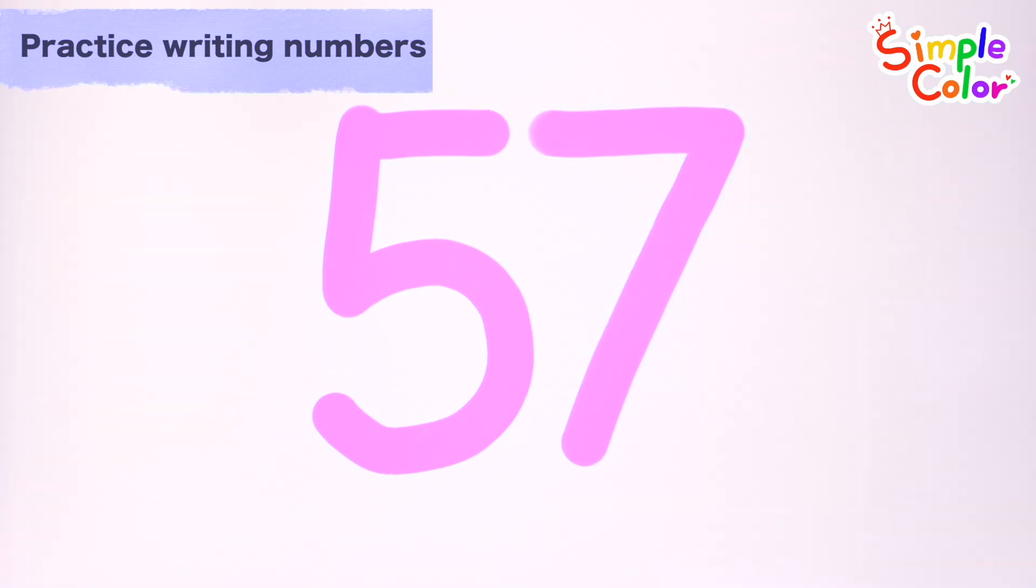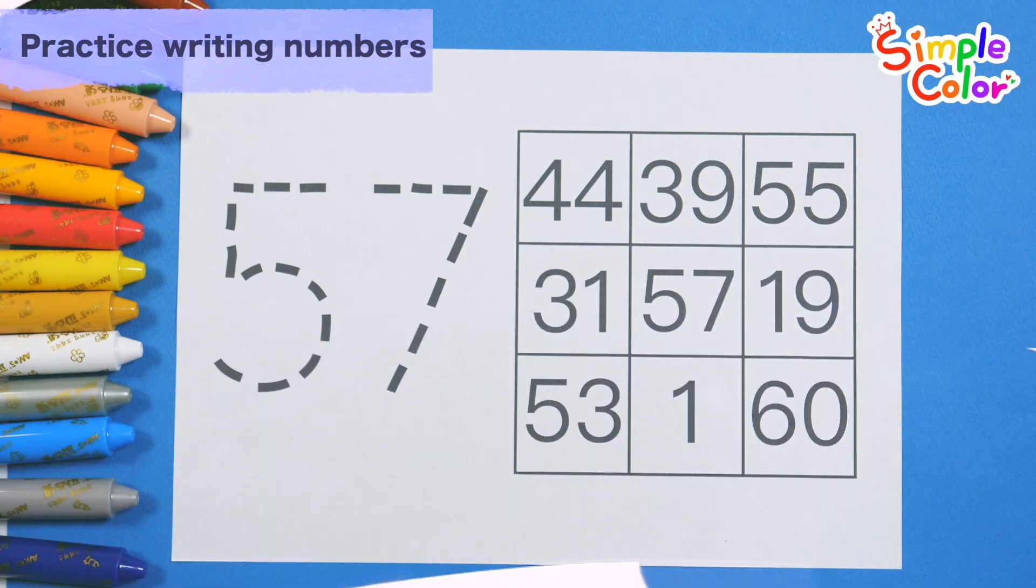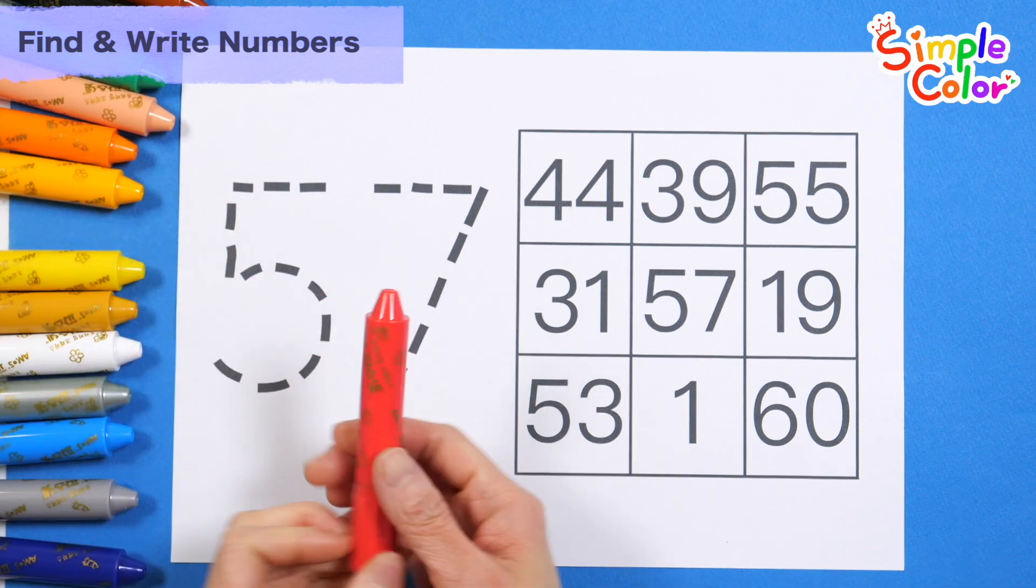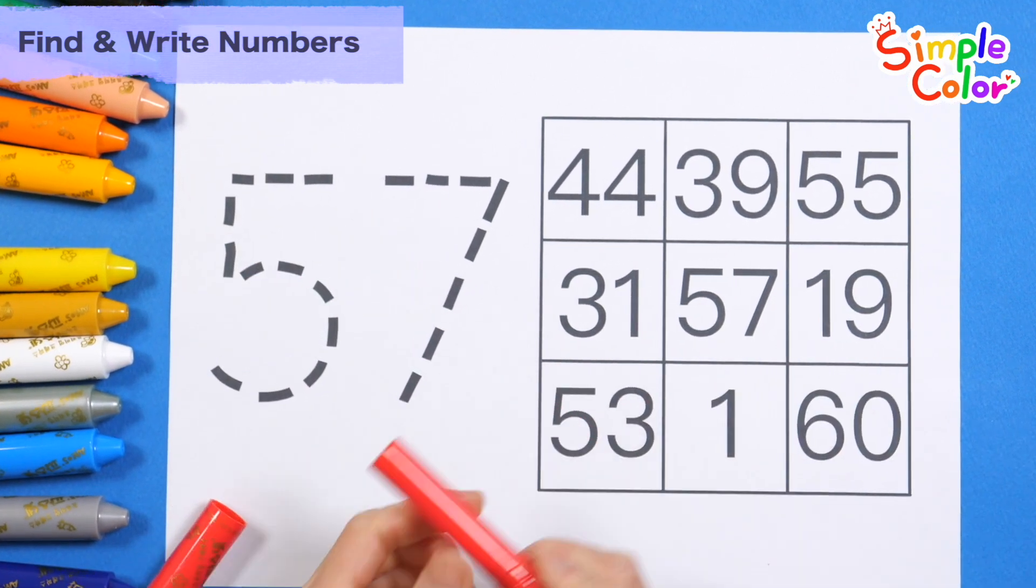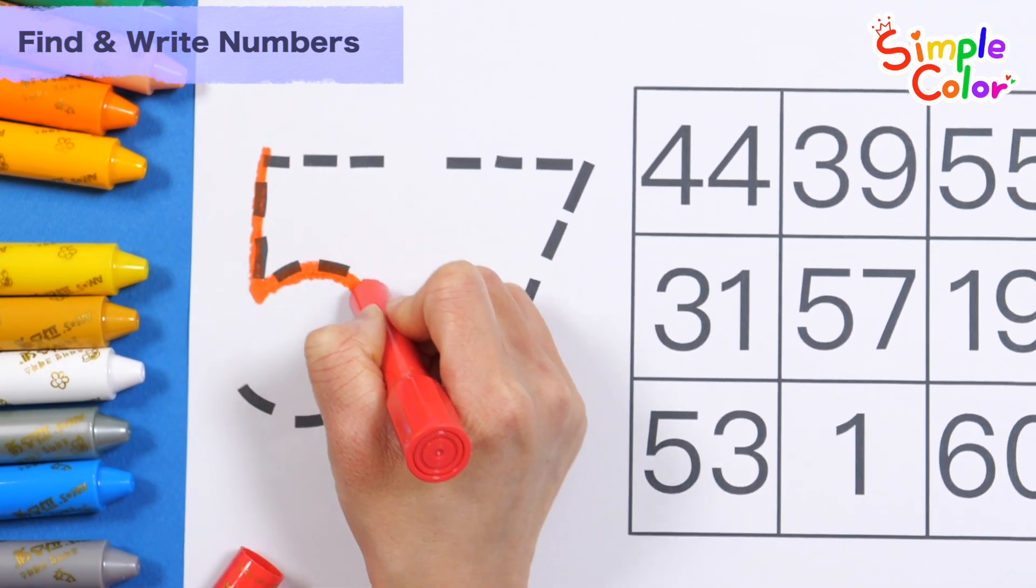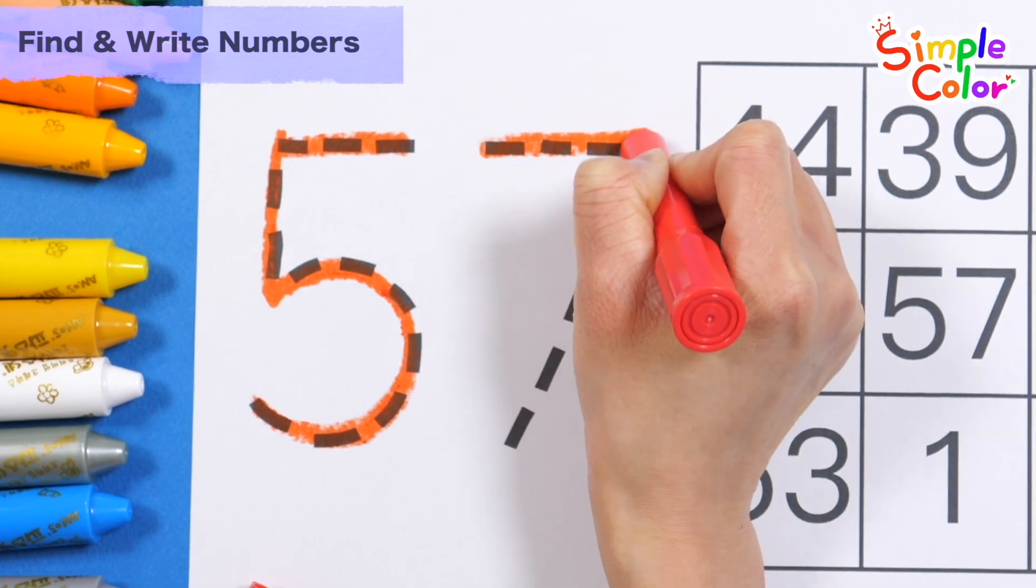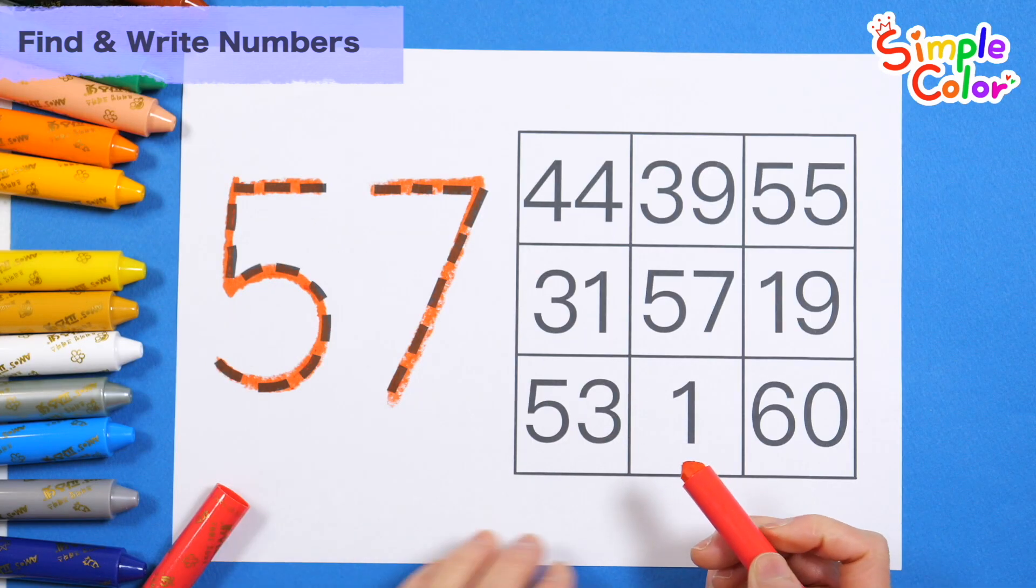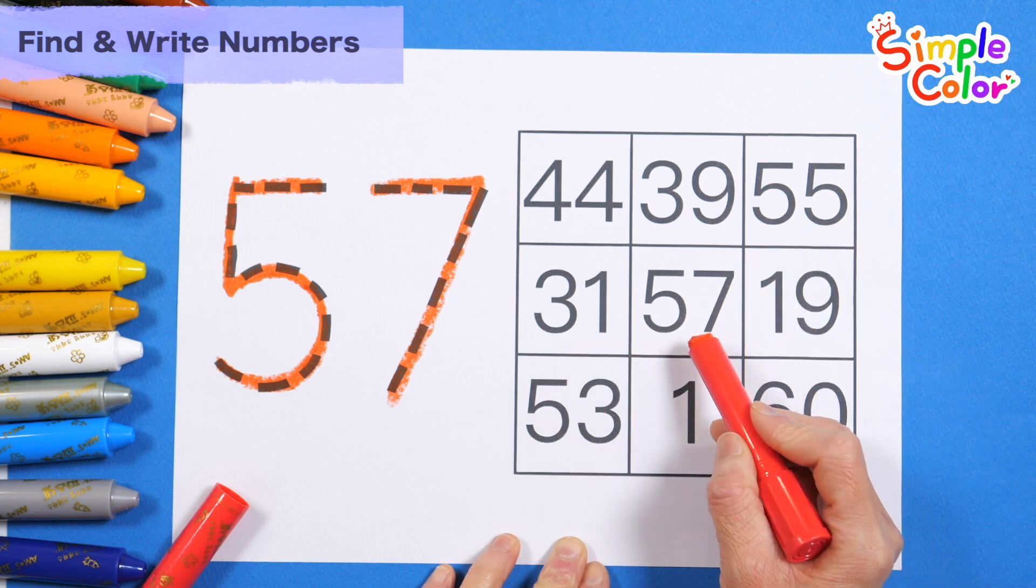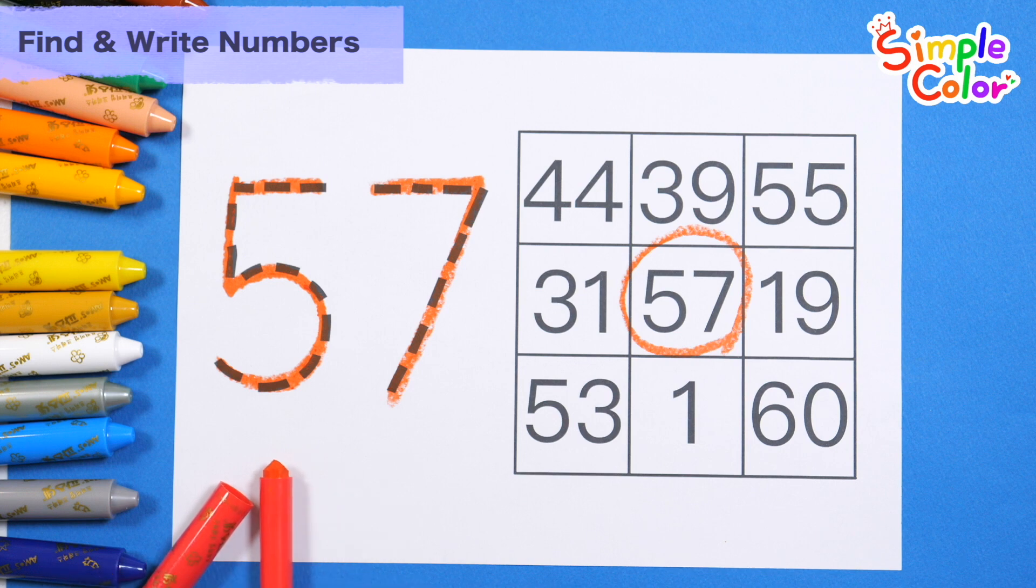Fifty-seven. Let's write the number fifty-seven on the left along the dotted line. Fifty-seven. Find the same number in the table on the right and circle it. Fifty-seven. Great job!